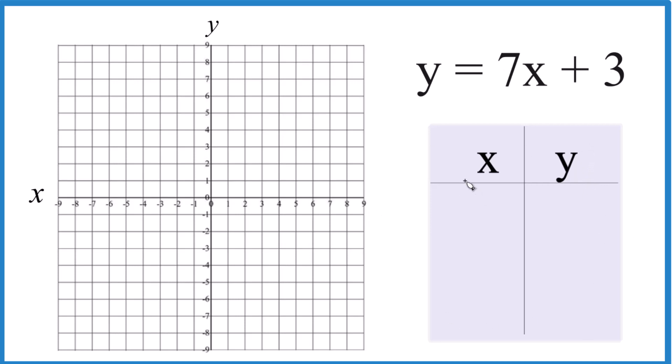But for our table of values, we're going to put values in for x here, figure this out, and then we have our y, we can just graph them. So let's say I always like to start with 0 for x, 7 times 0, that's 0, 0 plus 3 is 3.